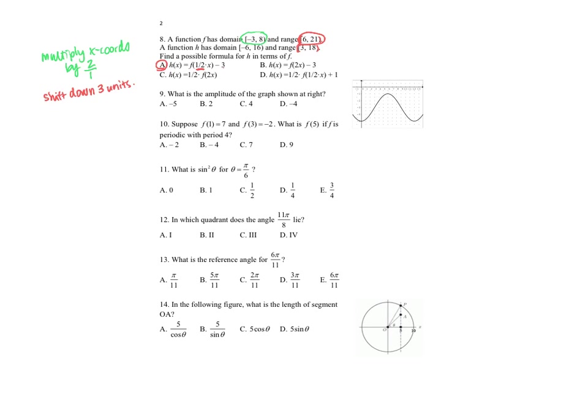Number nine: what is the amplitude of the graph shown? The maximum occurs at negative 1 and the minimum at 5 — a distance of 4 units. The amplitude is half of that, since it's measured from the midline, so the amplitude is 2. We always write amplitude in absolute value, so we get positive 2 even if the graph appears flipped or shifted.